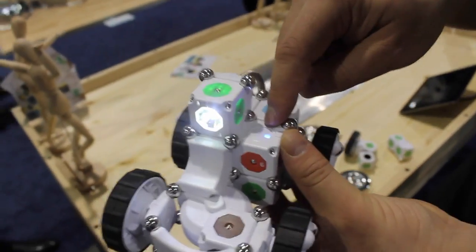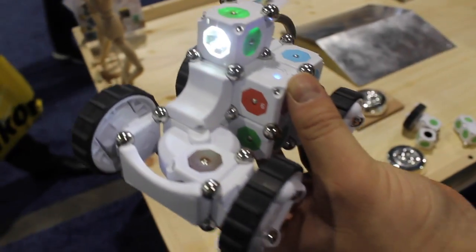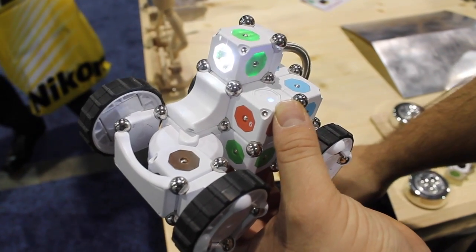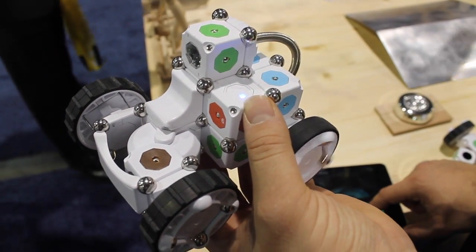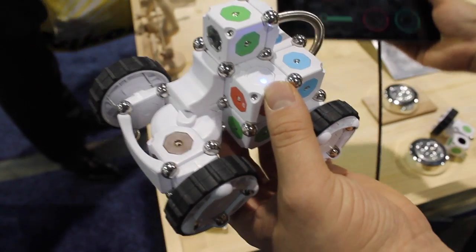This uses our Bluetooth block to pair with any iOS or Android device, so you can create your own remote control vehicles. This robot here, as an example, is a remote control car that we can control using this iPod app here.